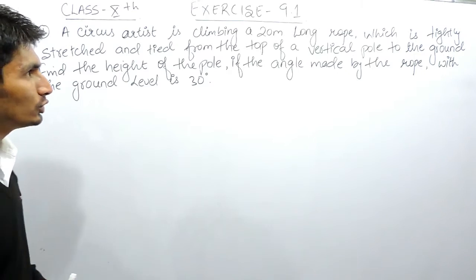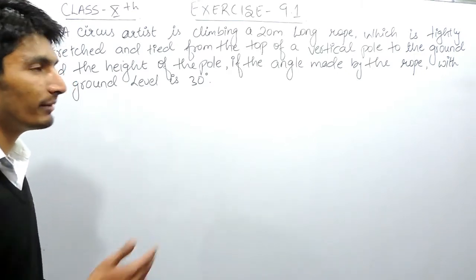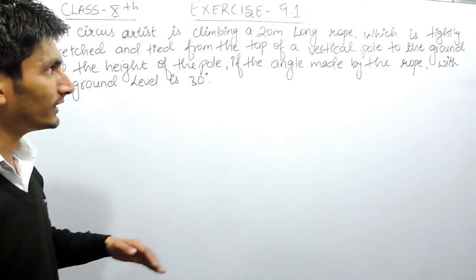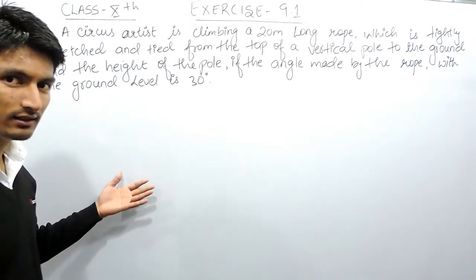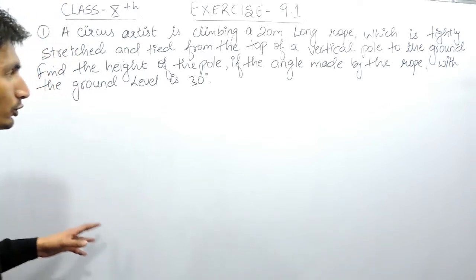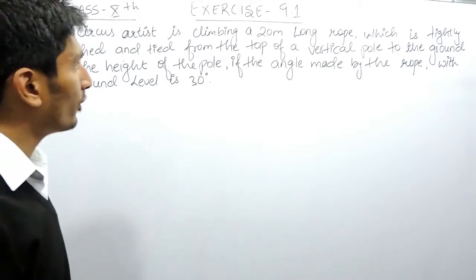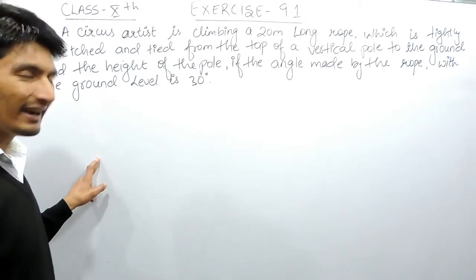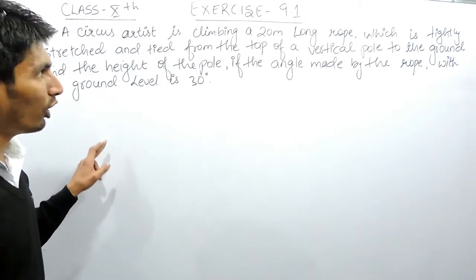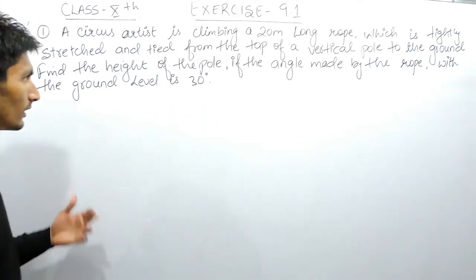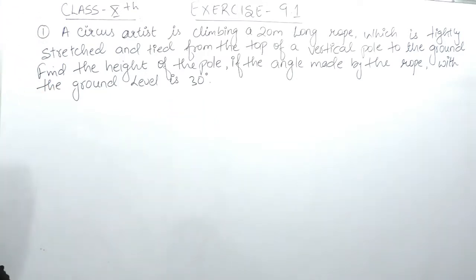We will have to find the measurement of one side of a right-angle triangle when the measurement of one side and one angle is given. Two things are important: first, always make a right-angle triangle, and second, always solve for the angle of elevation.